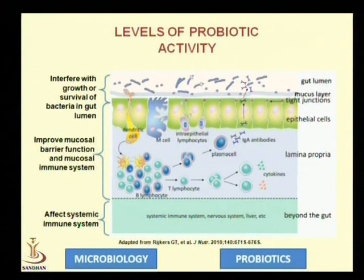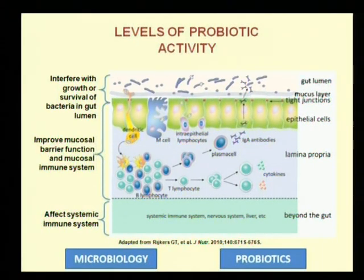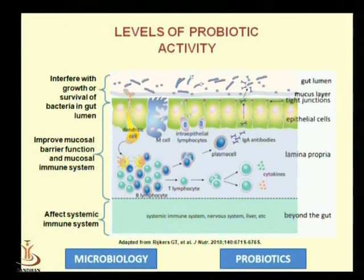Probiotic microorganisms can directly enter through certain columnar epithelial cells like M cells into the lamina propria, where they activate T cells. These T cells then produce certain cytokines that induce anti-inflammatory responses. Additionally, T cells activate B cells, which are converted into plasma cells responsible for the synthesis of secretory immunoglobulin A, which is then secreted into the gut to target pathogens.